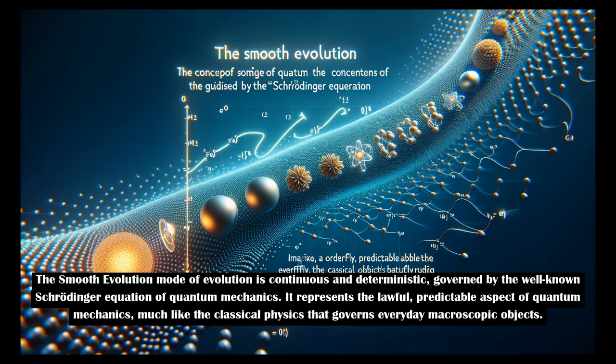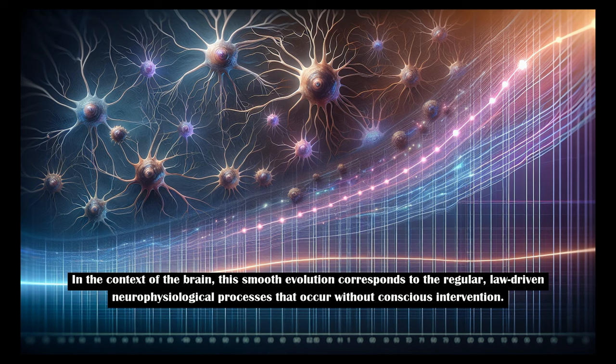The smooth evolution mode is continuous and deterministic, governed by the well-known Schrödinger equation of quantum mechanics. It represents the lawful, predictable aspect of quantum mechanics, much like the classical physics that governs everyday macroscopic objects.